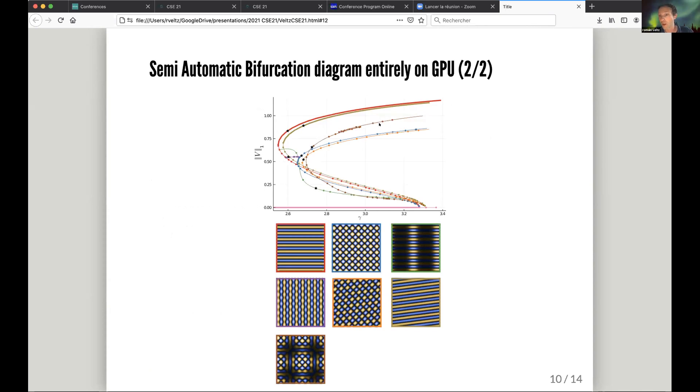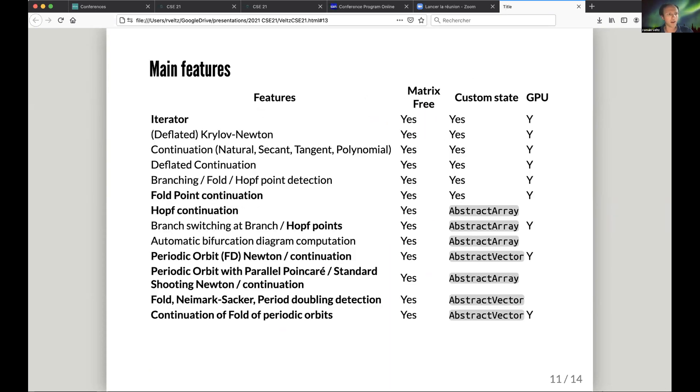I'll take a few seconds to highlight some features I did not describe. There's a very handy use of the algorithm using iterators, so you can just customize the path to your taste. There's also codimension-one continuation of fold points and Hopf bifurcation points. You can do branch switching at equilibria, but you can do the same at Hopf bifurcation points where you compute periodic orbits.